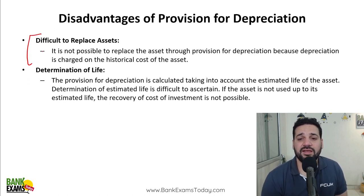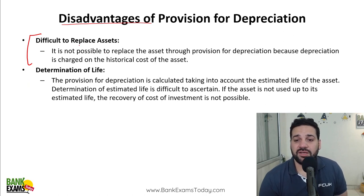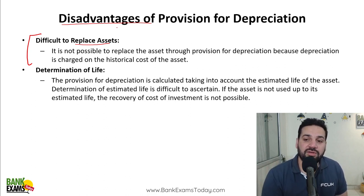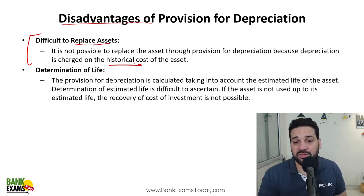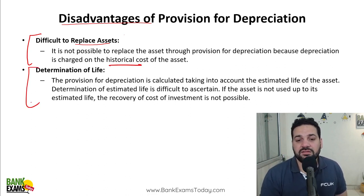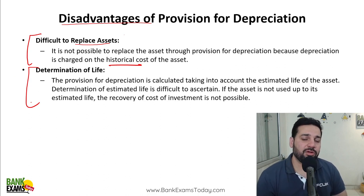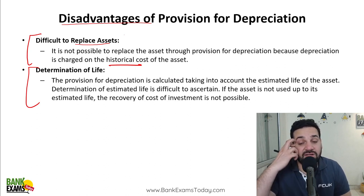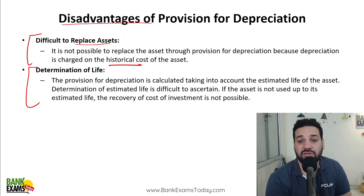Advantages: you get the true profit. Otherwise, if you are not charging depreciation — because it is a non-cash expense — cash is not going from your hands, so you won't get a true picture. And for replacement of asset, you are making a fund. Disadvantages: it is difficult to replace assets using depreciation because we write off the asset using historical prices, and the prices may change, so that fund may not be sufficient. Also, it is very difficult to calculate the life of an asset and the value of depreciation.